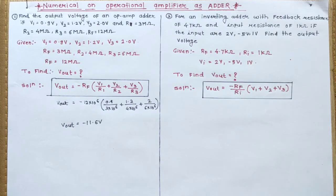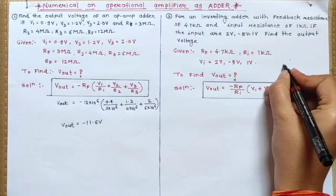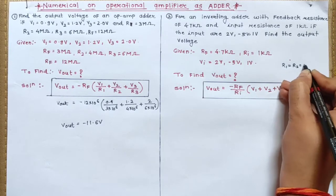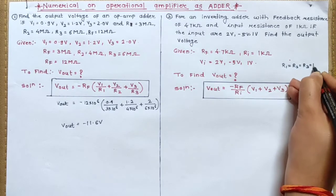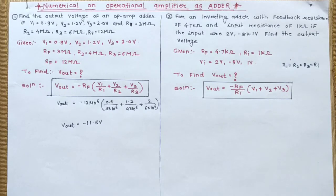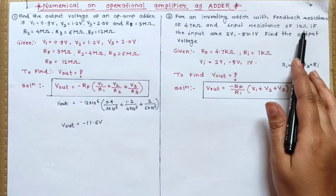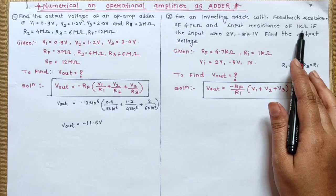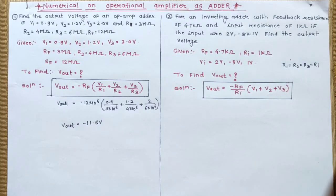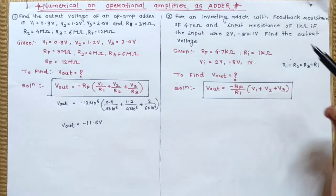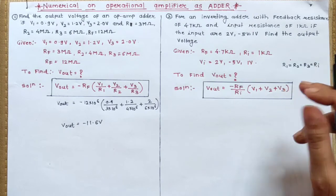Input resistance, that means the value of R1, R2 and R3. Here you can say R1 equals R2 equals R3 equals the input resistance, which is 1 kilo ohms.